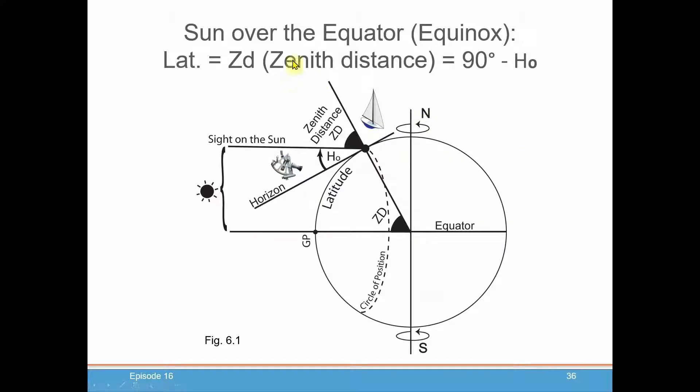So when the sun is over the equator, say at the equinox, and the sun is directly at its highest point wherever we are on the boat, that's considered local noon. Your latitude would just be the zenith distance, which is always 90 minus the altitude that you measure with your sextant, the HO.